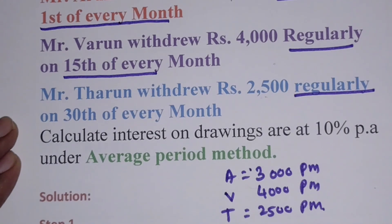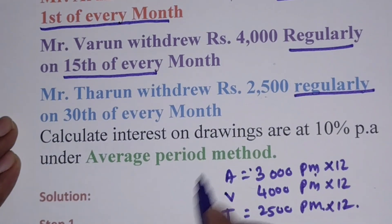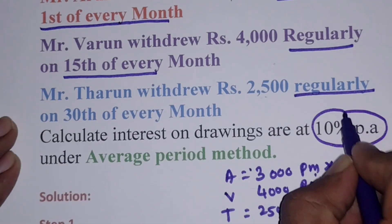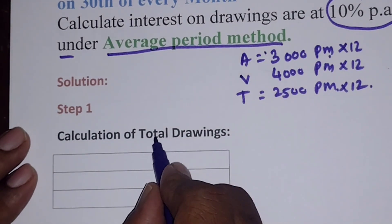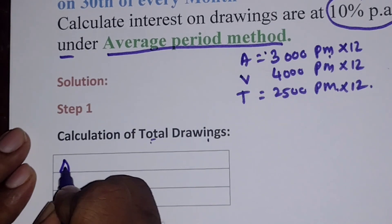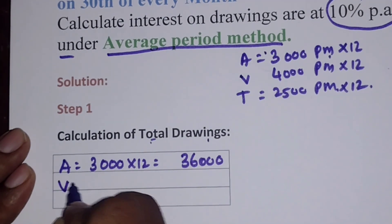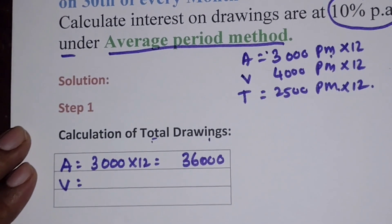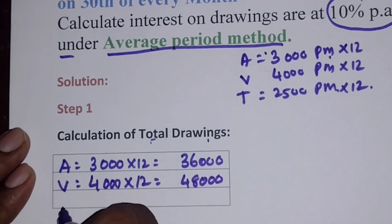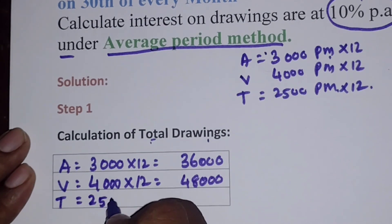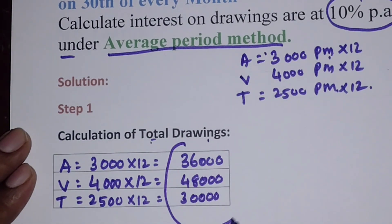We need to calculate interest on drawings at 10% per annum under the average period method. First, calculate total drawings: Arun = 3,000 × 12 = Rs. 36,000; Varun = 4,000 × 12 = Rs. 48,000; Tarun = 2,500 × 12 = Rs. 30,000.